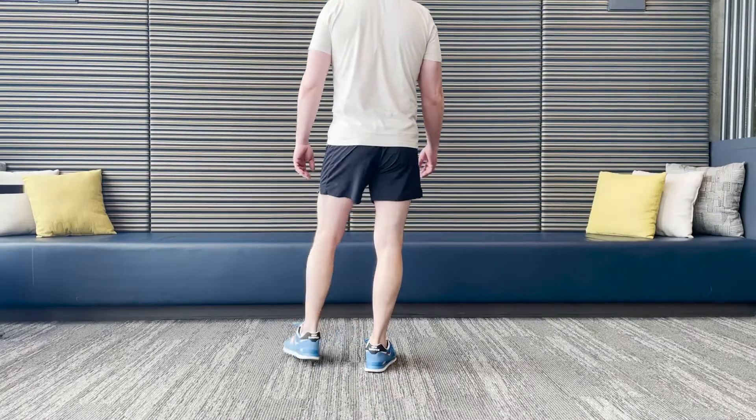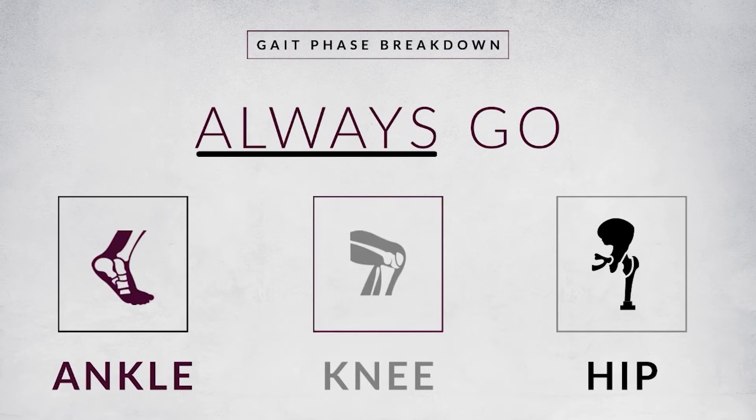For every phase of the gait cycle, you should consider three joints: ankle, knee, and hip. That doesn't mean there's a muscle contraction occurring at every joint, but it's a great way to make sure you don't forget one. One of the biggest things most students forget is they focus on the ankle and foot but forget either the knee or the hip. If you always say 'ankle, knee, and hip,' you'll always hit all the joints you need to at the bare minimum.